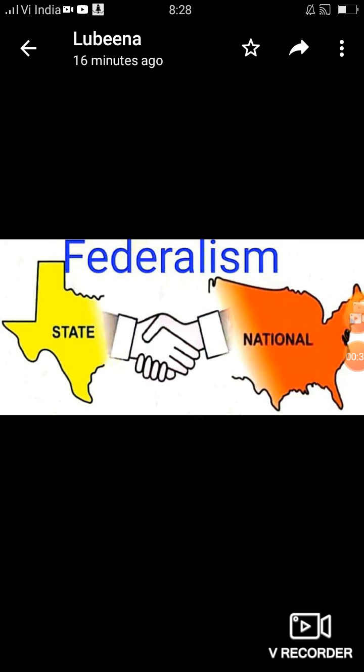Federal system एक ऐसा system होता है जिसमें central और state government एक ही स्रोत यानि संविधान को संप्रभु शक्ति के अधीन होती है और दोनों प्रकार की government अपने jurisdiction में law बनाती है। जो federalism word है वो 'foedus' से लिया गया है जिसका मतलब होता है treaty या agreement।